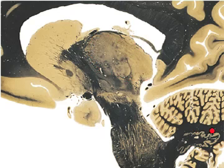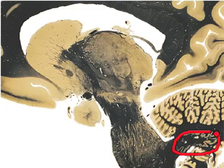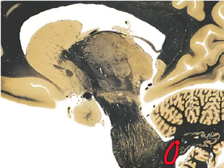We can see the cerebellum is right here. We have the dentate nucleus right there, and then we have the inferior cerebellar peduncles right here, which is a major input route into the cerebellum.